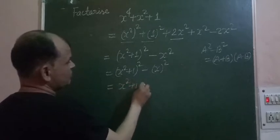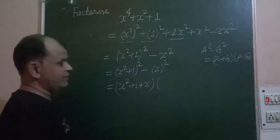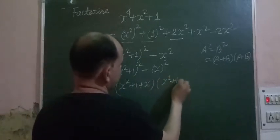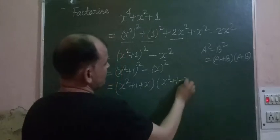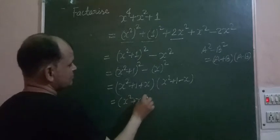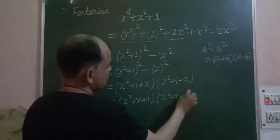So x squared plus 1 minus x - in the first we add: x squared plus 1 plus x, and in the second we subtract: x squared plus 1 minus x. So we derive it as x squared plus x plus 1 and x squared minus x plus 1.